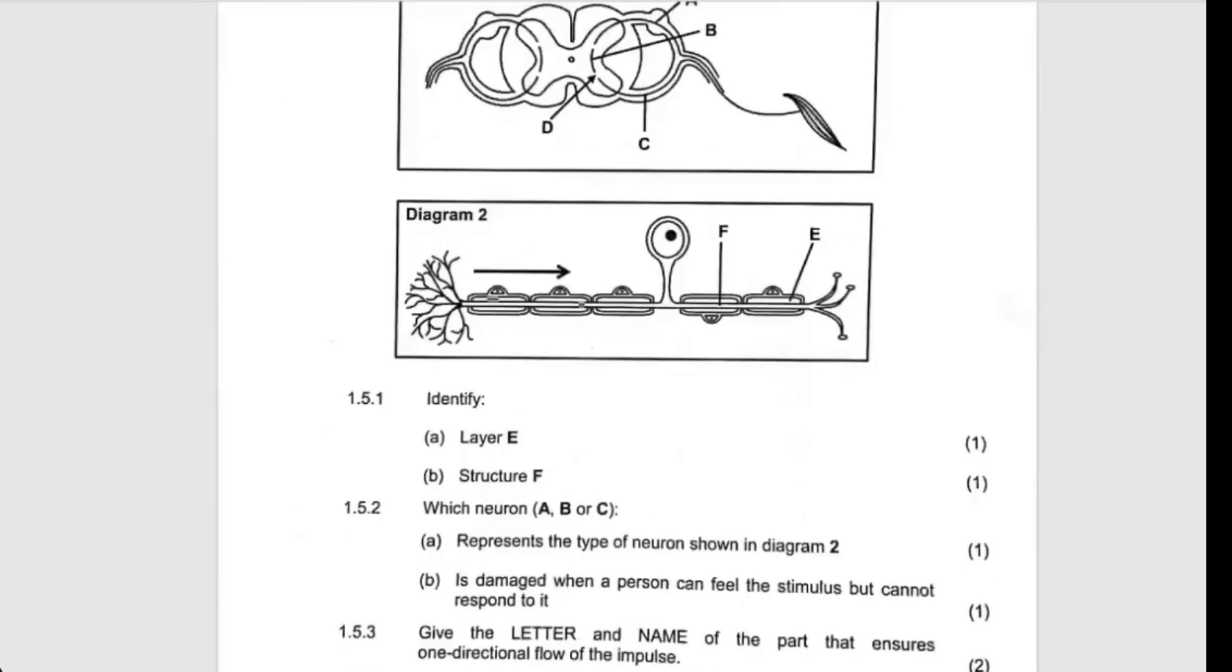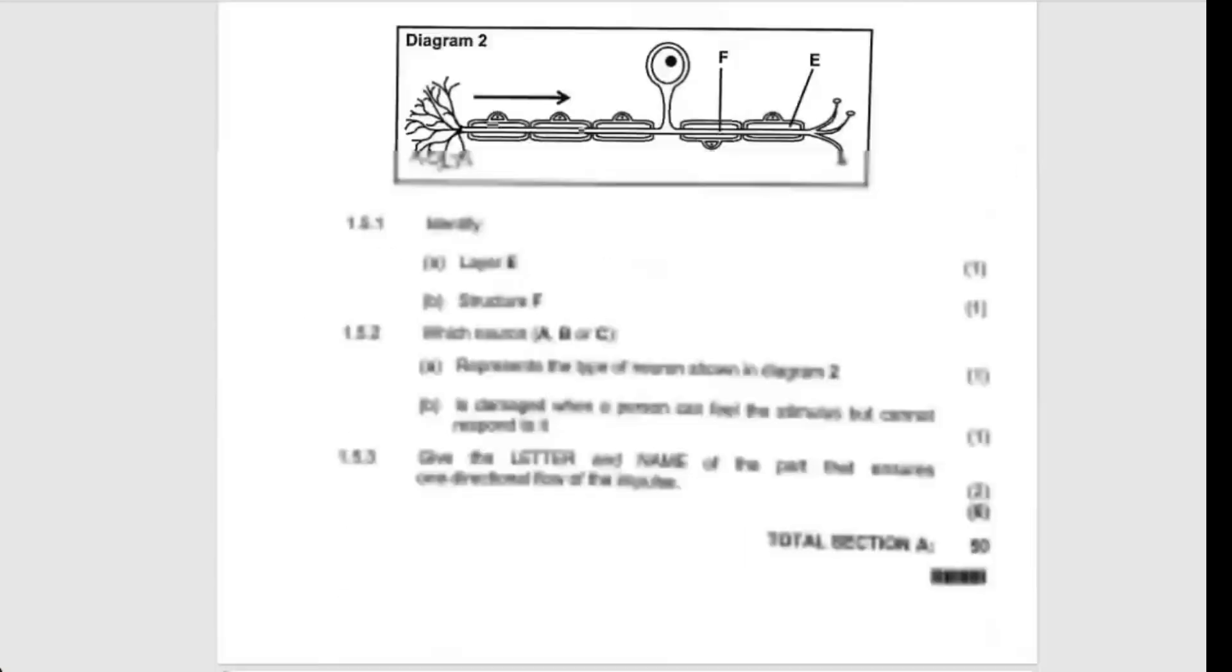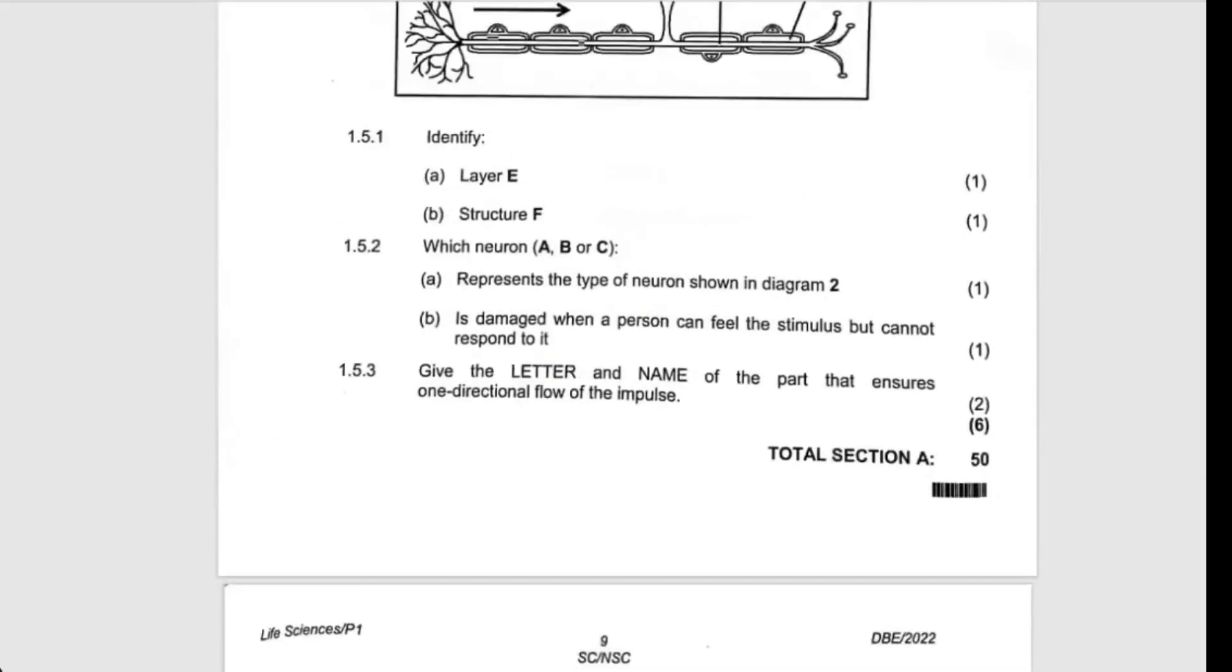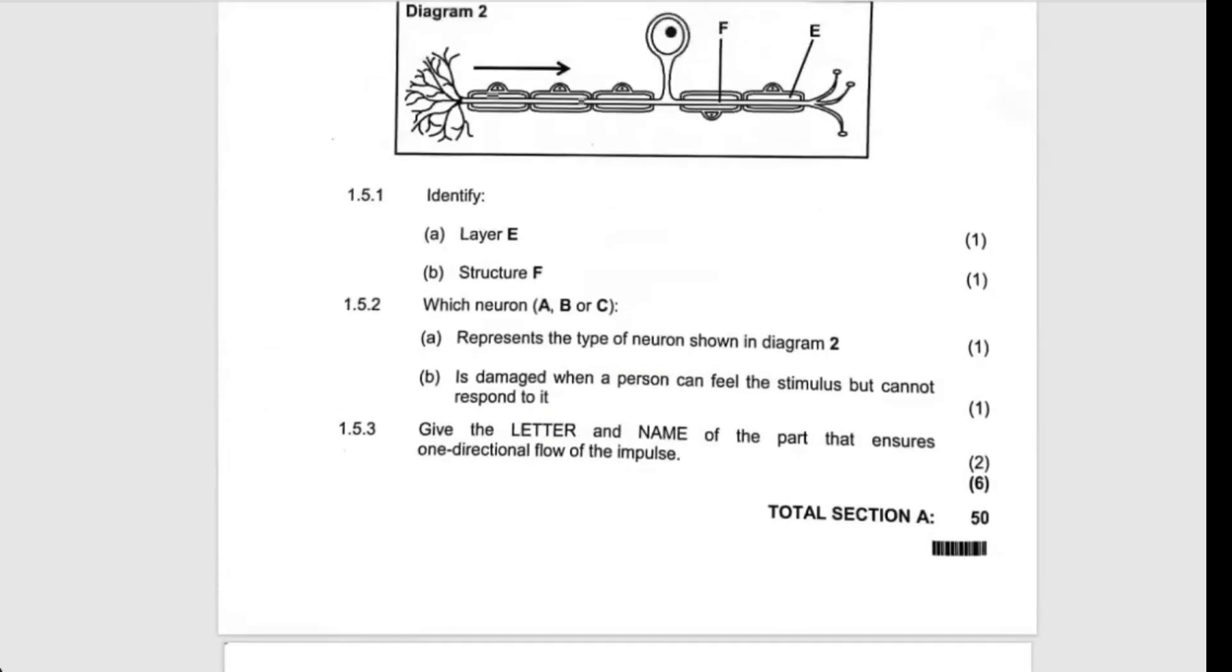They are saying that if damaged, when a person can feel the stimulus but cannot respond, it means that the sensory neuron is working, that's why you can able to feel, but the motor neuron cannot work, that's why you can't respond.